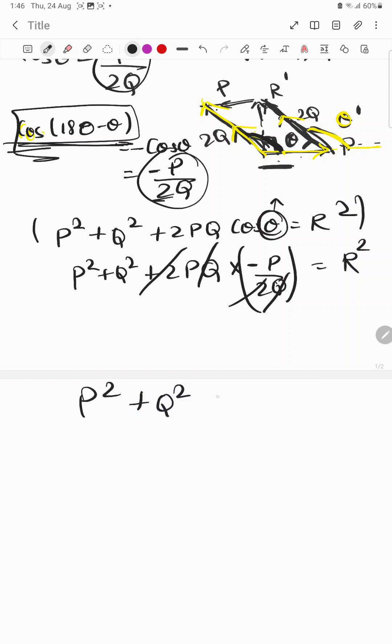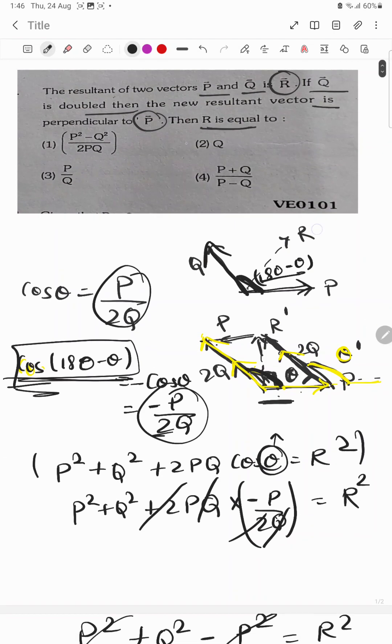P² + Q² minus P² equals R². So R will be equal to Q. That is your answer, option 2.